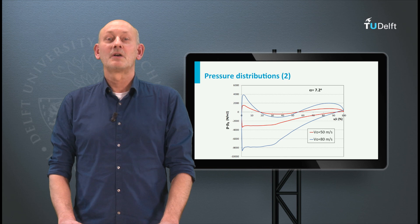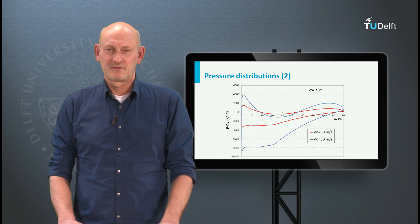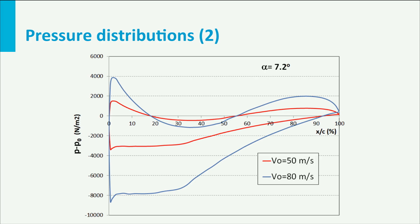This last part is called an adverse pressure gradient. In fact, the steeper this adverse pressure gradient, the more the boundary layer has difficulty to reach the trailing edge, since the increasing pressure in fact slows down the fluid particles.